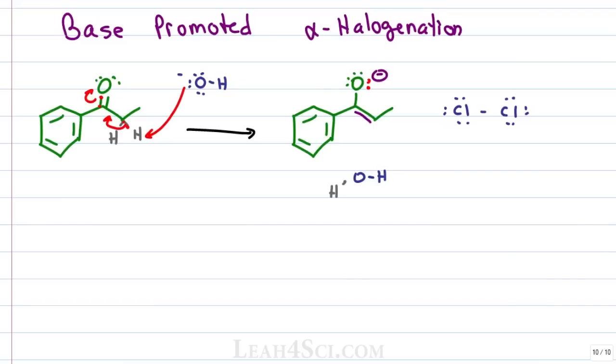The next step is very simple, the enolate electrons will collapse back down to reform the carbonyl kicking out those pi electrons so that the attack comes directly from the alpha carbon. Those electrons will reach out for and grab one of the halogens collapsing the bond between them and kicking that second chlorine off as a chloride in solution. Our product has a reformed carbonyl and the chlorine atom sitting at the alpha position.